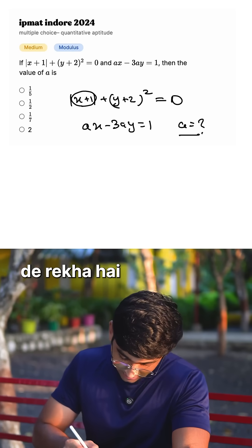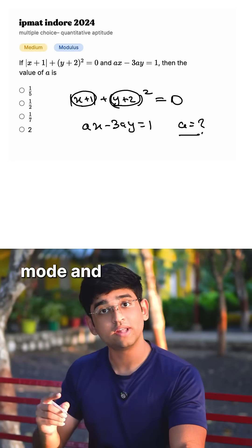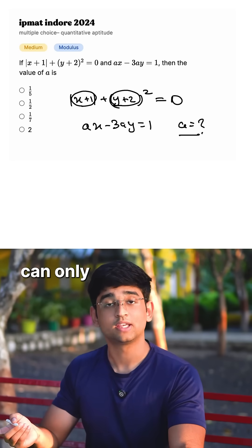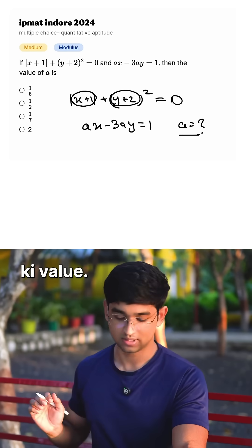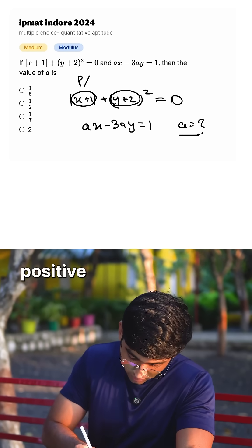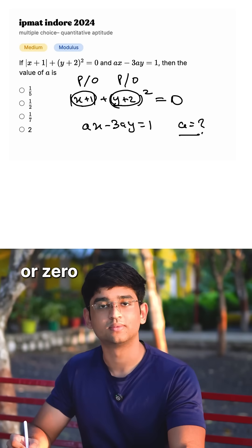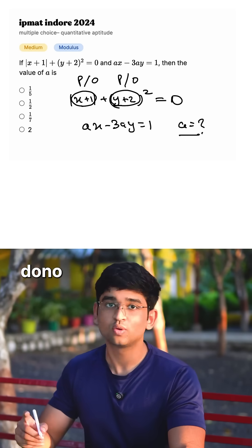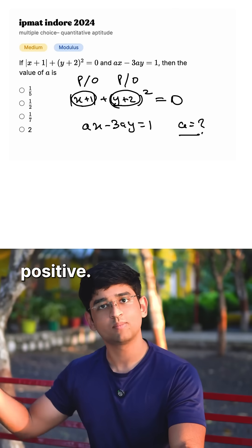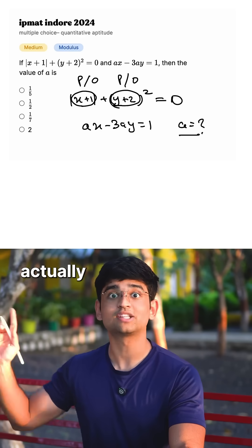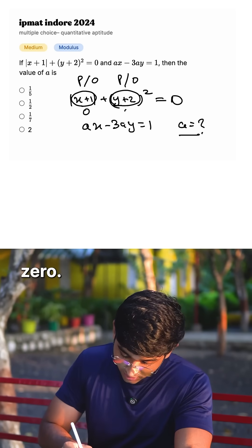Now, mod and square can only give out a positive value or a 0 value. This has to be either positive or 0, and this has to be either positive or 0. If both are positive, then the sum of positive plus positive is positive, but the sum is actually 0. So both of them should be 0.